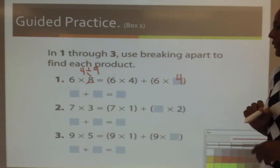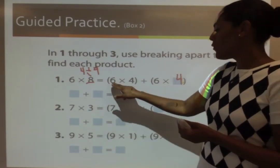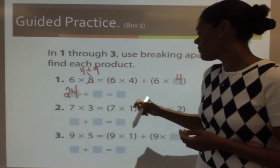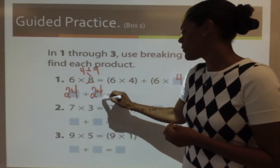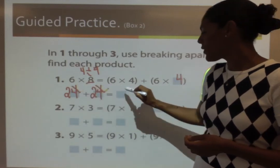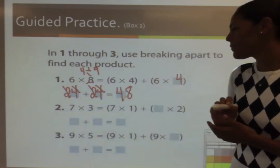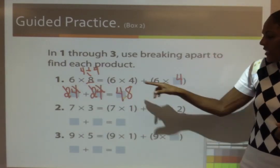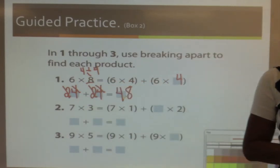And now, I'm going to solve this problem first, and then this problem. 6 times 4 is 24. And now, I'm going to add 4 plus 4 is 8. And 2 plus 2 is 4. So, 6 times 8 is 48. So, we just use the distributive property to break apart this fact that we could not remember.